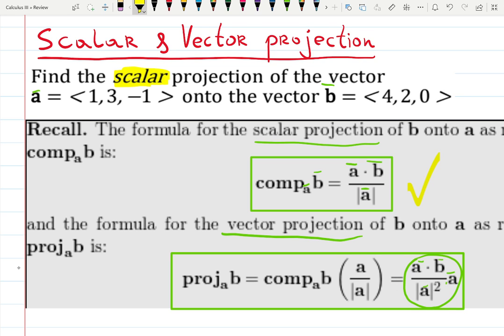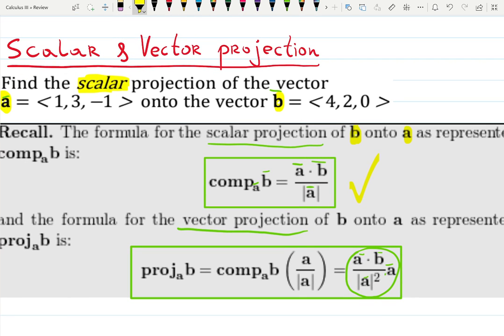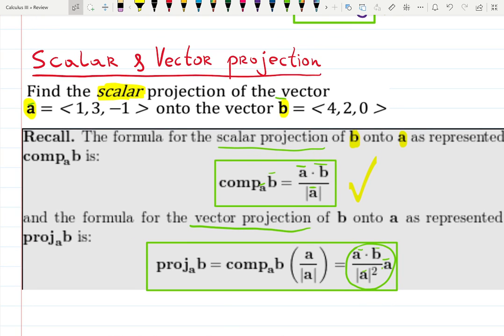Then which vector onto which vector? A onto B. While in this formula we're giving B onto A. I always remember that whoever... I always remember the denominator will have a vector on which we are projecting. So B will go into the denominator in this case.